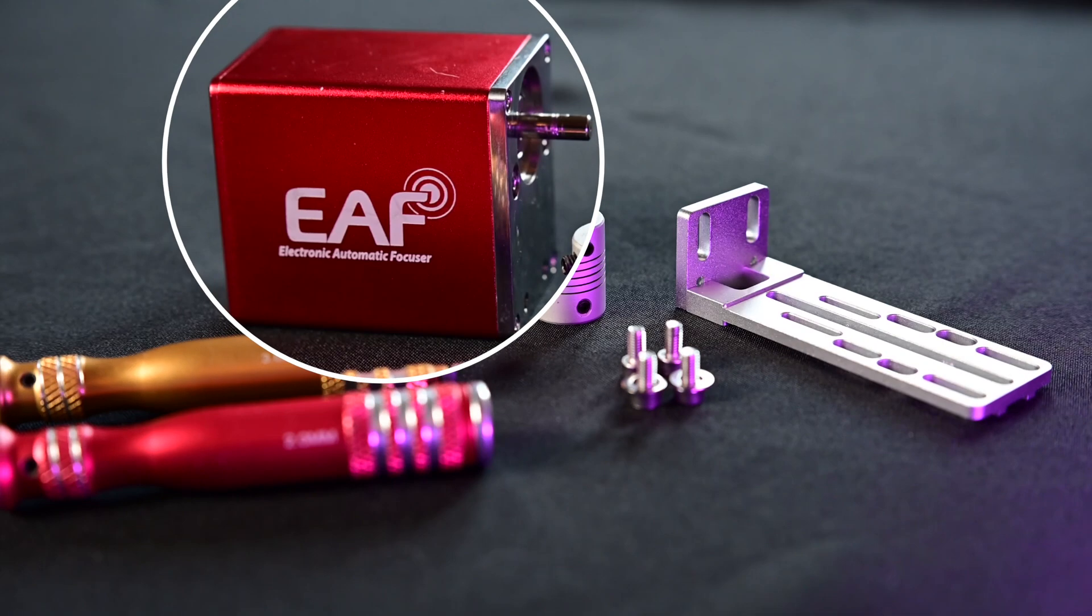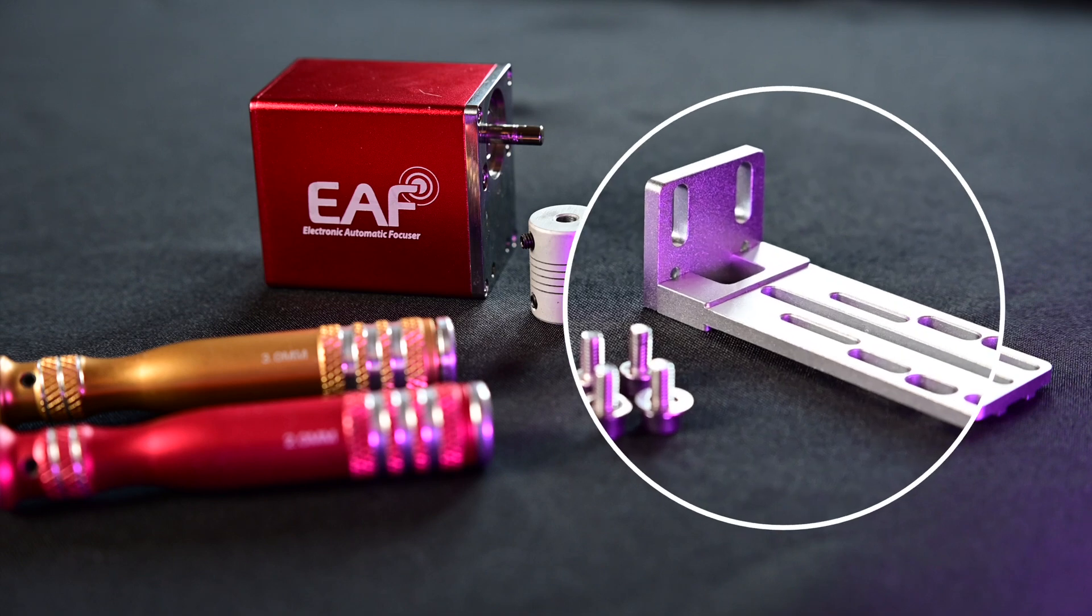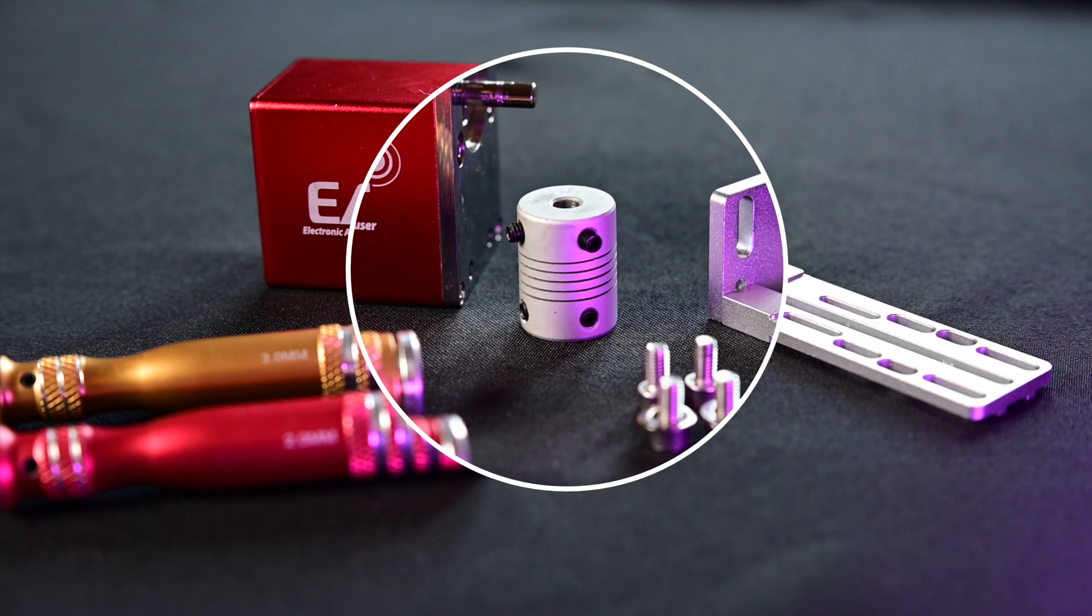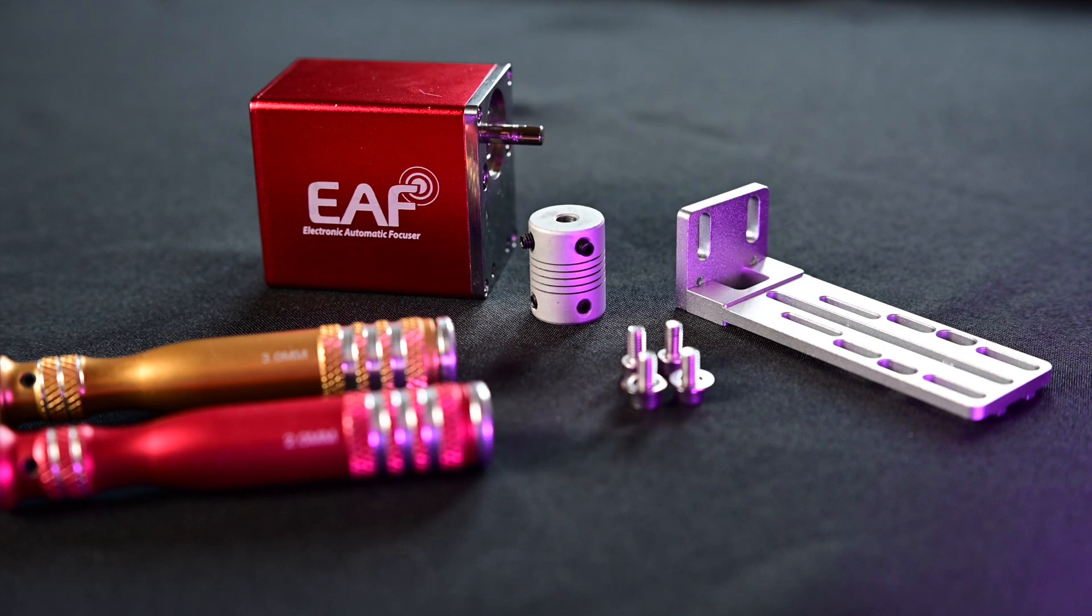For this installation on the Z73 and Z61, you're going to need a few things. You're going to need a 2 millimeter and 3 millimeter hex head tool, also the EAF itself, the bracket, and one of the collars or couplings that will fit on your telescope.